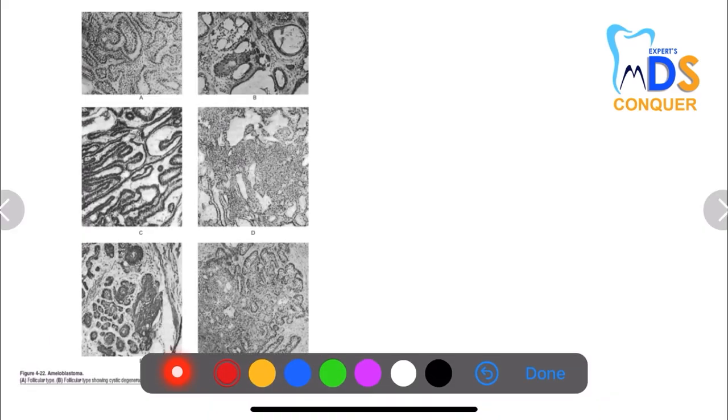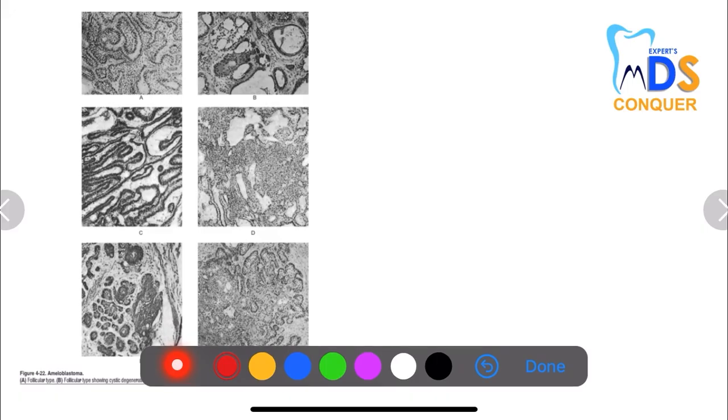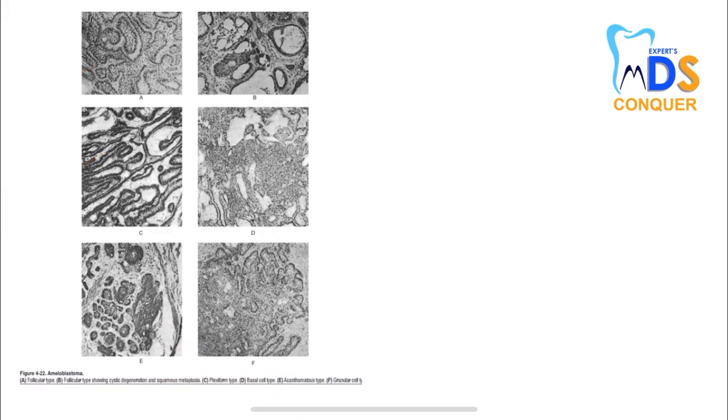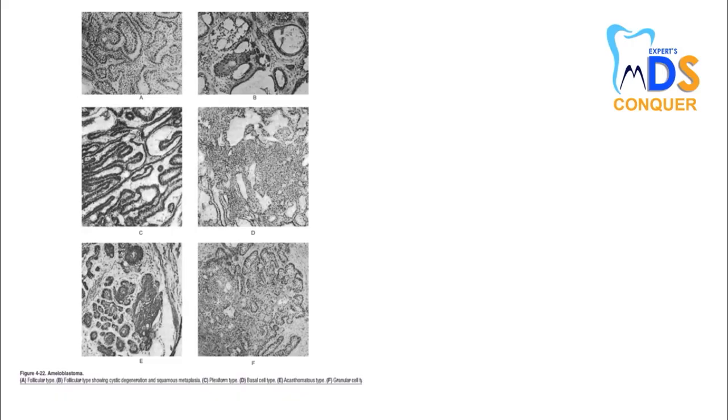Next is ameloblastoma. The various subtypes shown include follicular, plexiform, basal cell, acanthomatous, and granular types. It is quite difficult at this stage to identify the subtypes of ameloblastoma, but just have a look; if you are aware of the histological features you can answer. These are the subtypes — just give them a glance.